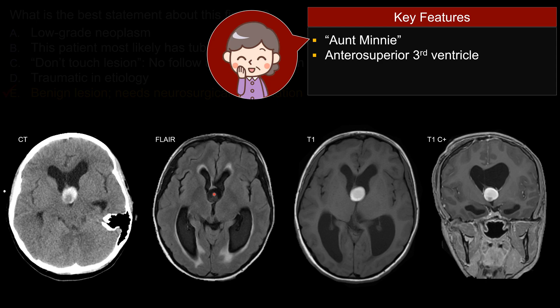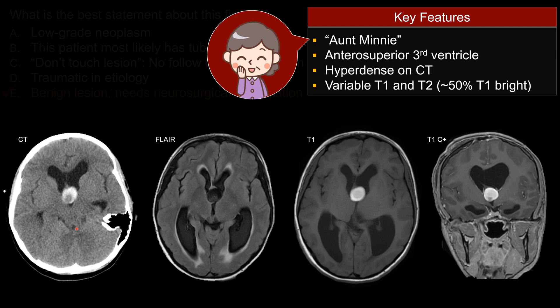That's its classic location. It is typically hyperdense on CT, and sometimes incidentally on trauma scans it can be mistaken as hemorrhage, as in this case. Typically it's bright on T1 — at least 50% of the time it's bright on T1. Some can be a little bit isointense on T1.